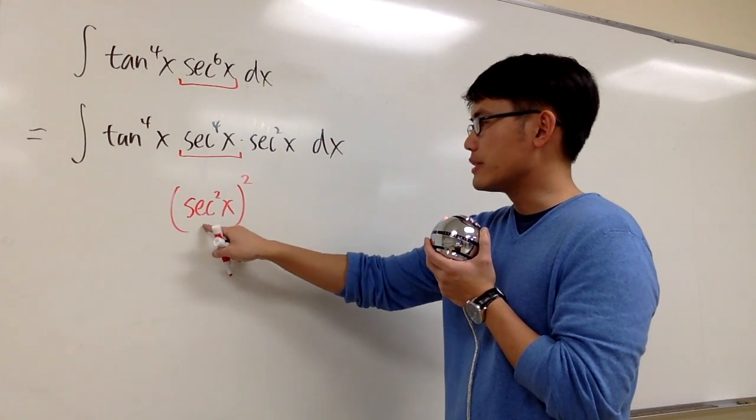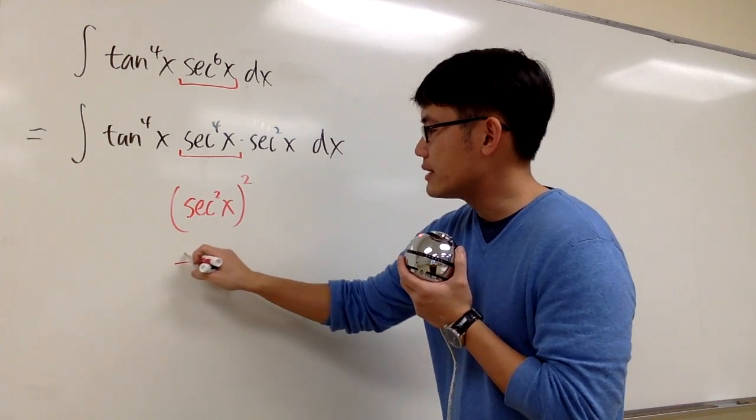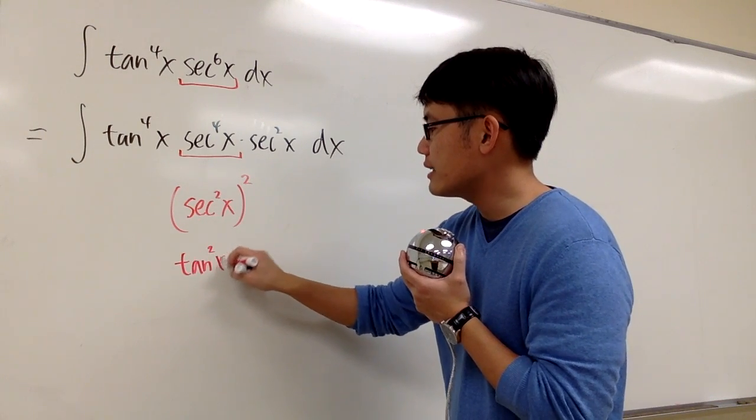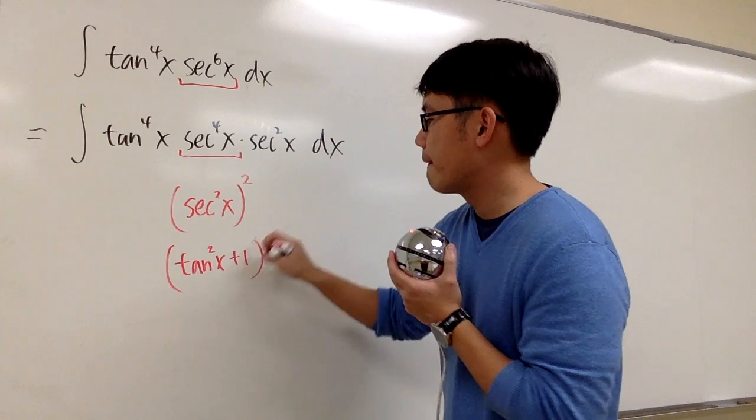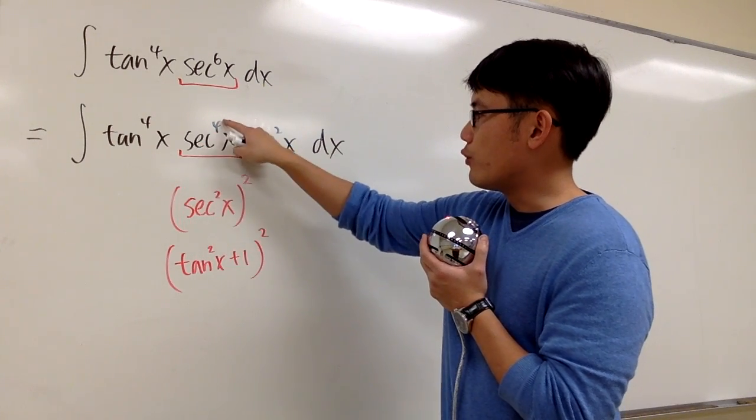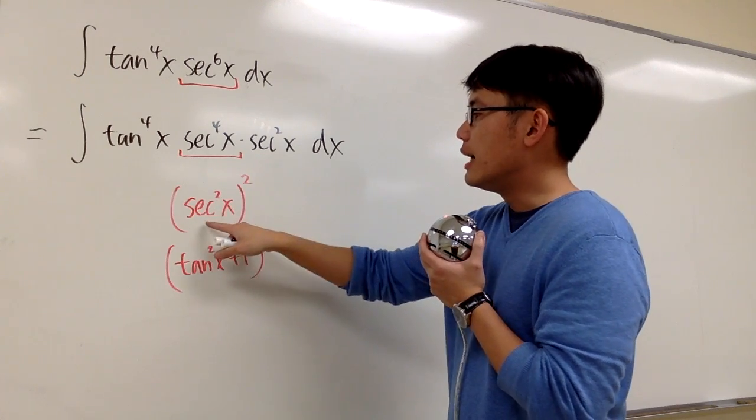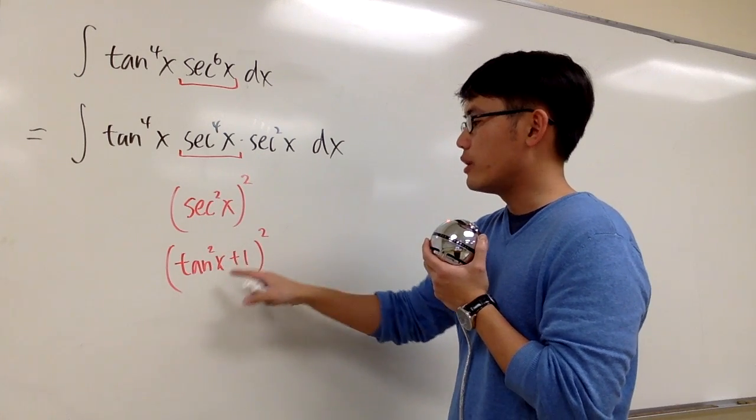And then do we know anything about secant squared? Yes, we do. Secant squared is the same as tangent squared x plus 1. So once again, secant to the fourth power is the same as saying secant squared x to the second power, and secant squared is the same as tangent squared plus 1.